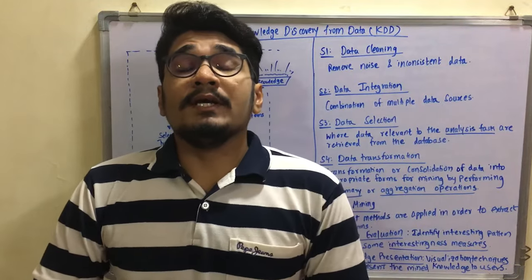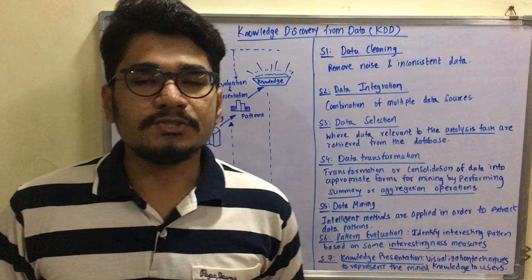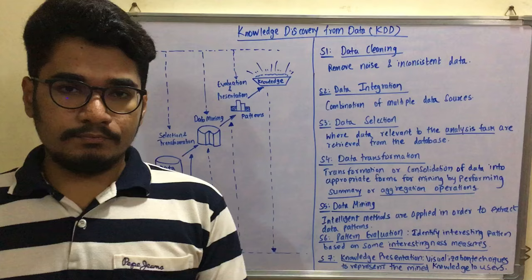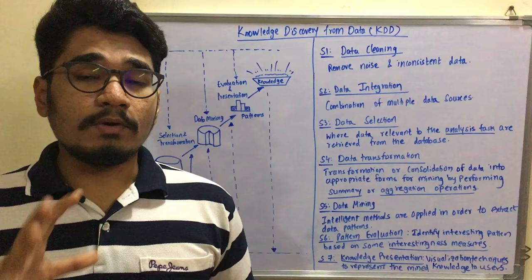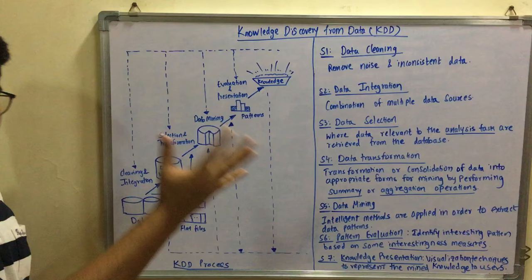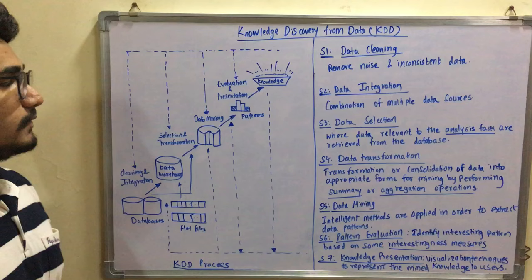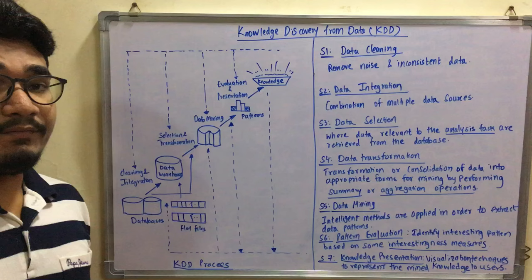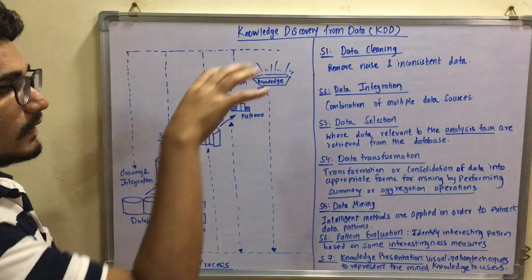Hello viewers, today I am here with a new topic: data mining and business intelligence. Let us see what is the basic concept of data mining, or from where we can extract this kind of data. For that you need to understand one concept called Knowledge Discovery from Data, which is short-formed as KDD. Here you can see a diagram for this. Basically in the process of KDD you have seven different steps, and I'll go into detail with examples.